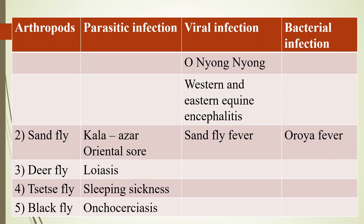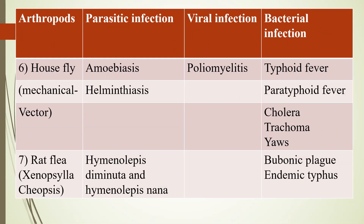Fifth, black fly — which causes onchocerciasis, also called river blindness, caused by the parasitic worm Onchocerca volvulus.